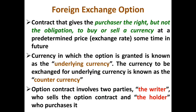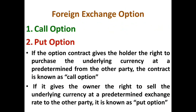The currency to be exchanged for the underlying currency is known as the counter currency. For example, if the option contract specifies the right to buy $1,000 at an exchange rate of rupees 75 equals dollar one, then the dollar is the underlying currency and the Indian rupee is the counter currency. To participate in the option market, one must either sell or buy an option contract, which always involves two parties: a writer, who sells the option contract, and a holder, who purchases it.